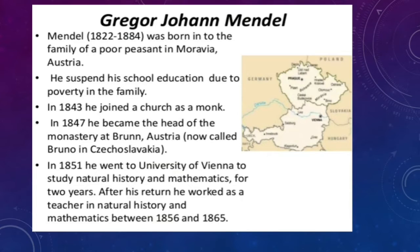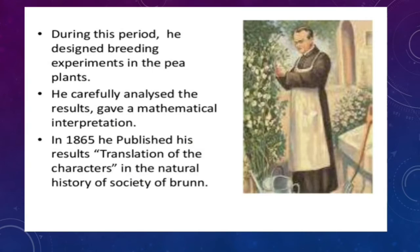Mendel was born to a family of poor peasants in Moravia, Austria. He gave up his education due to his family's poverty, and in the year 1843 he became a monk in a church. In 1847 he became the head of the monastery in Austria. In 1851 he went to the University of Vienna and started studying natural history and mathematics. He was actually a mathematician, so when he researched the pea plant, all the data was mathematically derived, using various statistical and mathematical ratios to reach his conclusions.